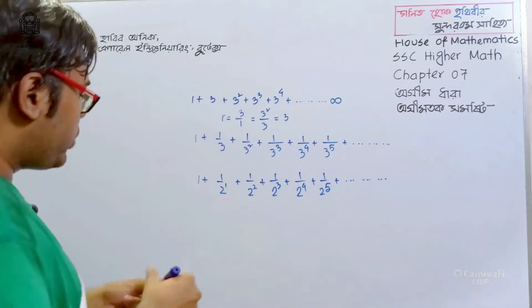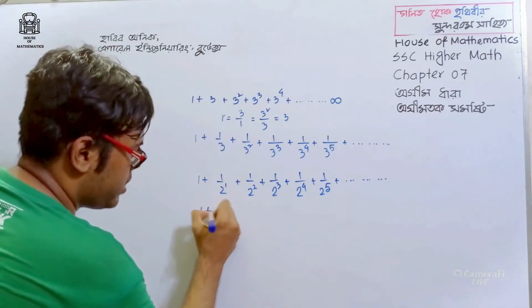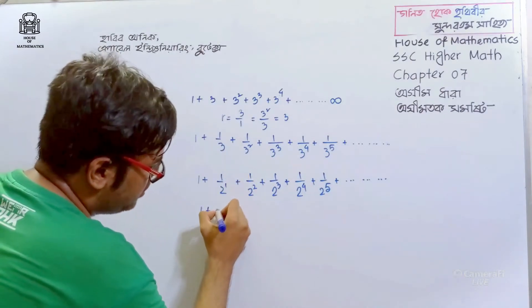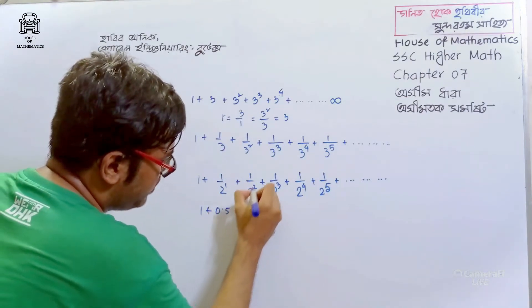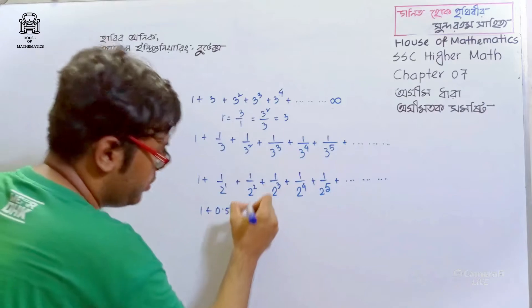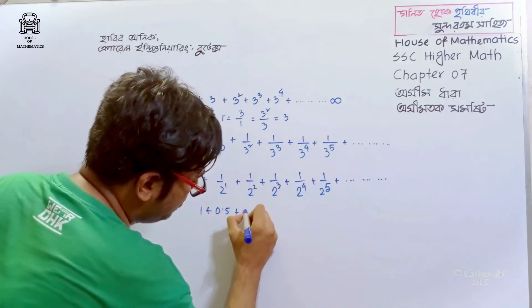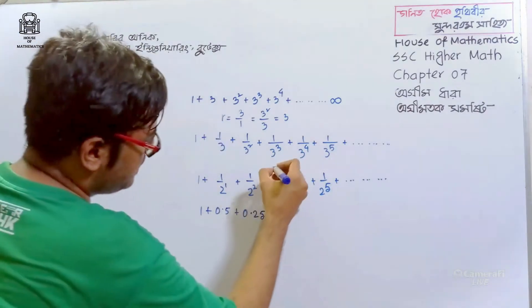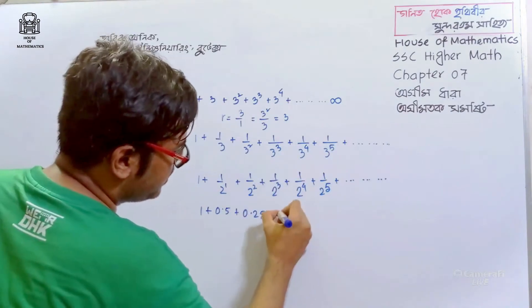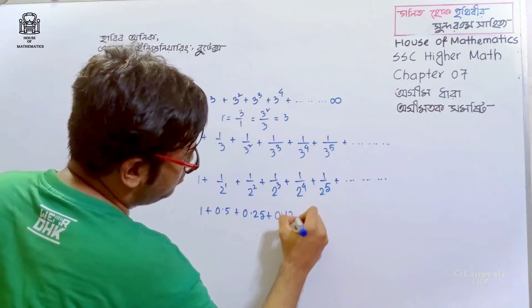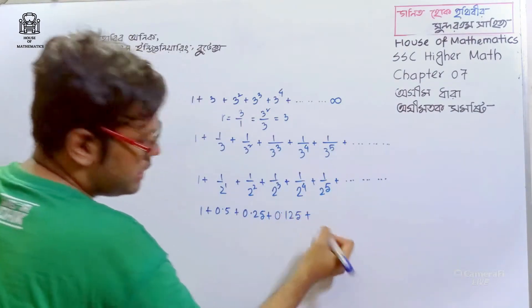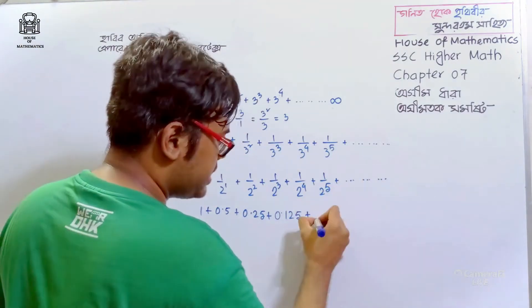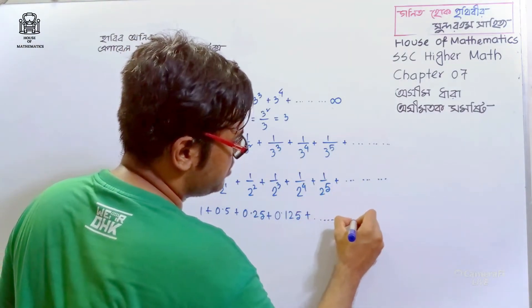If you have 1, that's true — you can say 1. Then 1 by 2 means 0.5; 1 by 2 squared means 0.25; 1 by 4 is 0.25; and 1 by 8 is 0.125.